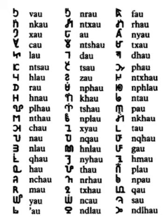Paha Hmong, known also as Ntawv Paha, Ntawv Keeb, Ntawv Kab Fab, and Ntawv Soob Lwj, is an indigenous semi-syllabic script invented in 1959 by Xiang Lu Yang to write two Hmong languages: Hmong Da and Hmong Njua, also known as Hmong Leng.